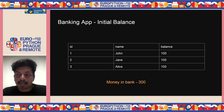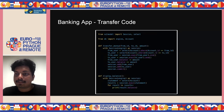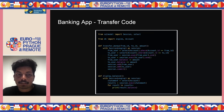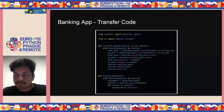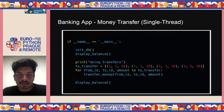Looking at the initial table, John, Jane, and Alice each have their IDs and balances, so the total money in the bank is $300. The transfer code has two functions: transfer_money and display_balance, both using sessions. The transfer_money function takes a from_user and to_user as arguments, deducts the balance from one user, adds it to the other, and commits the session.